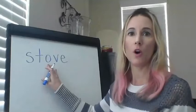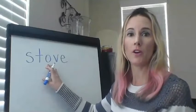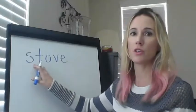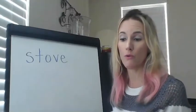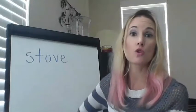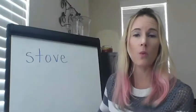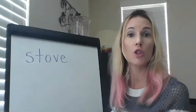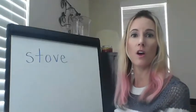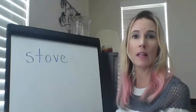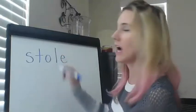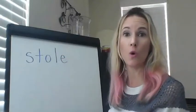You'll notice that we have our long O pattern — an O, a consonant, and the silent E. So the word is stove. We're going to take stove and change it to stole. Think about where the sound is changing: stove, stole. The V is changing to an L. Out goes the V, in goes the L to make stole.